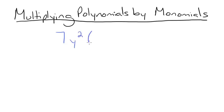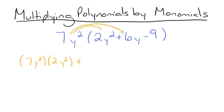7y squared times 2y squared plus 6y minus 9. Now remember, we have to multiply each part of the polynomial by this monomial. So we're going to start by multiplying 7y squared by 2y squared. So we'll have 7y squared times 2y squared plus 7y squared times 6y plus 7y squared times negative 9.